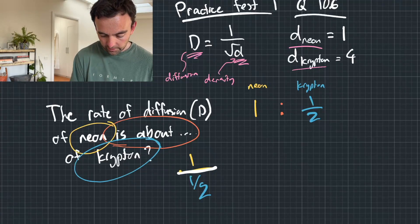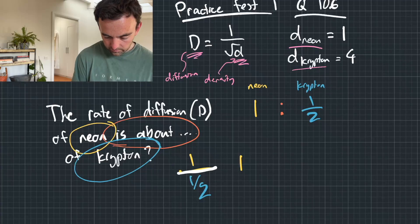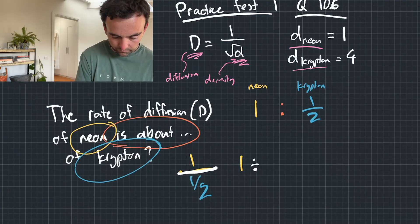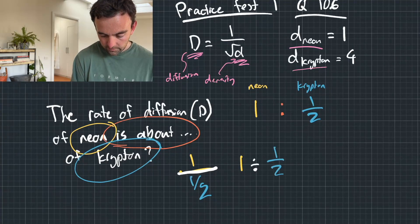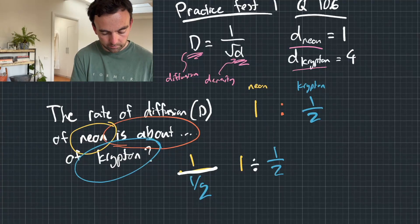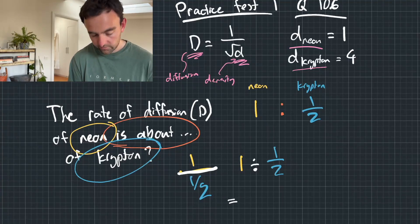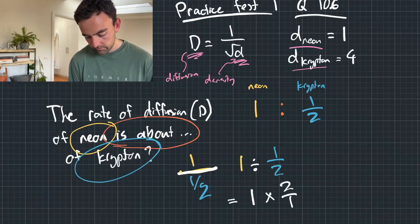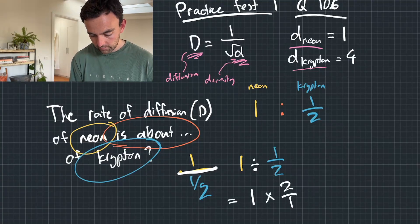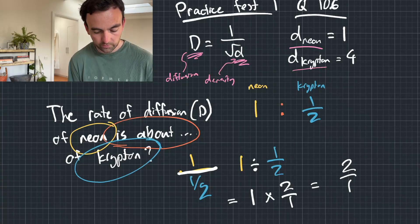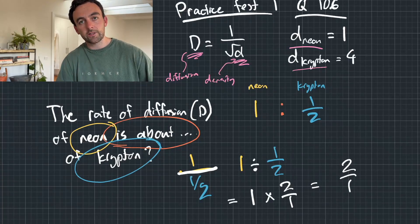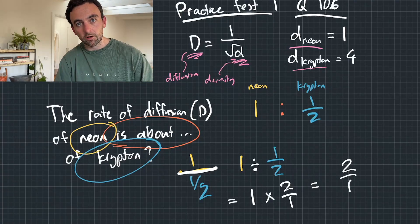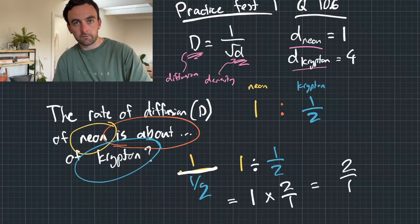Then we write it like this, because that's the form that we want. Then we can apply our reciprocal law. So that equals one over one times two over one, which then just equals two over one, which equals two. So the rate of diffusion of neon is about twice of krypton.